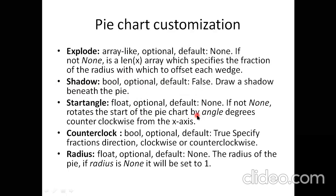startangle lets you define the angle from the x-axis where drawing begins. For example, if startangle equals 90, the pie starts drawing from 90 degrees. counterclockwise is also a boolean — if true, it draws anti-clockwise; if false, it draws clockwise.